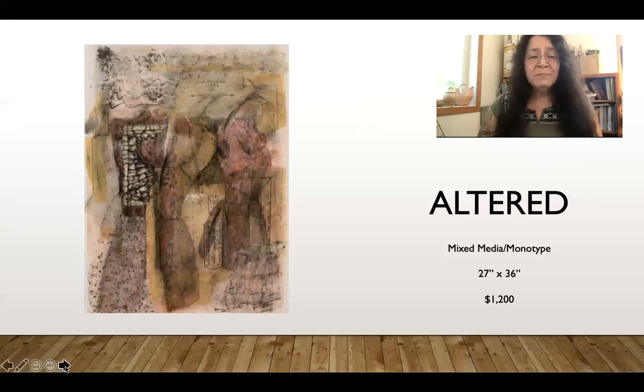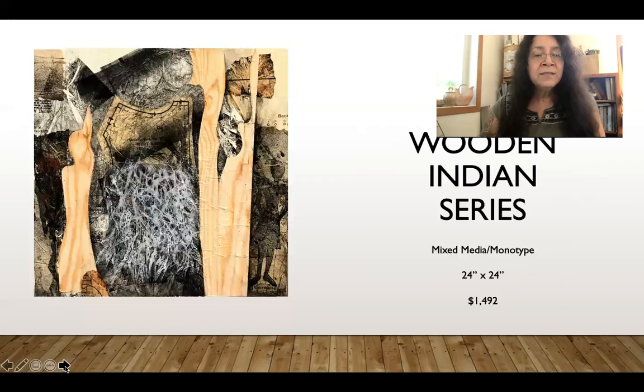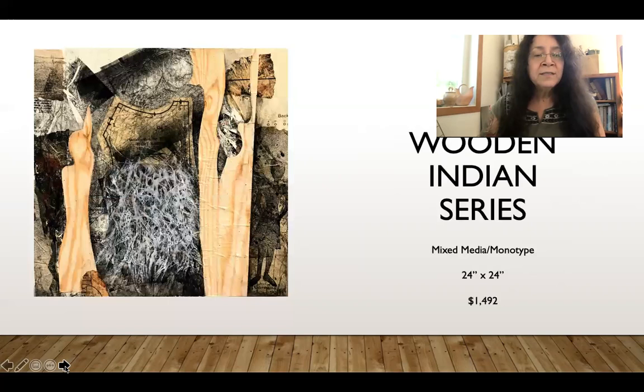These are some dress forms that I drew and then made monotypes from, and then did a lot of collage with them. These are larger pieces called 'Altered,' and they all have the dress forms in them as the main image behind them. In this one you can't really tell that much anymore, but it's in there.